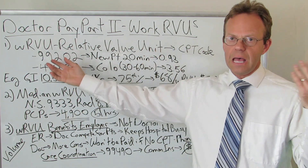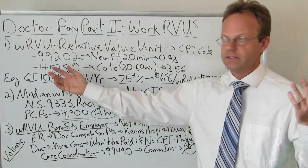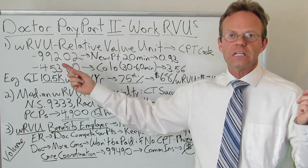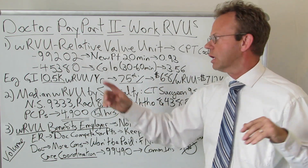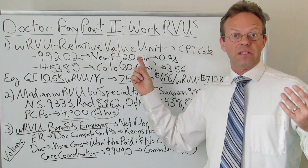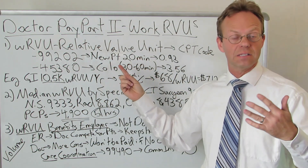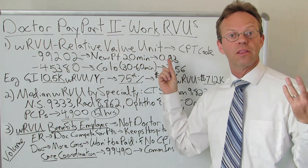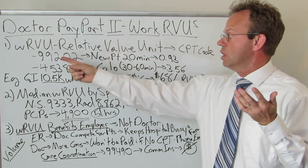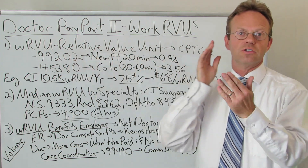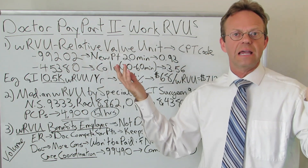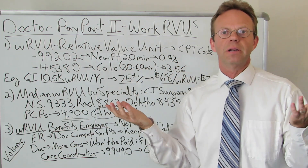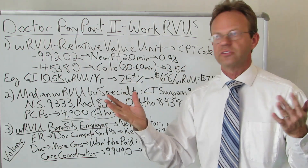Let me give you some examples. An Evaluation and Management CPT code for an office visit — for example, 99202 — is a new patient visit of medium to lower complexity. It's expected that the doctor will spend about 20 minutes of face-to-face time with the patient, and that carries an RVU of 0.93. So if they see five patients with that code, you multiply five times 0.93 to get the total RVUs billed.